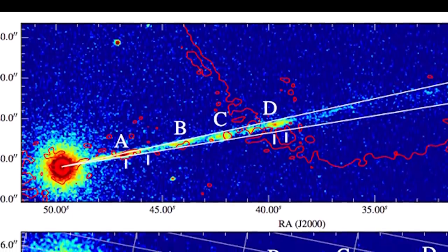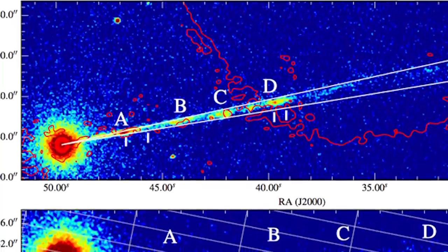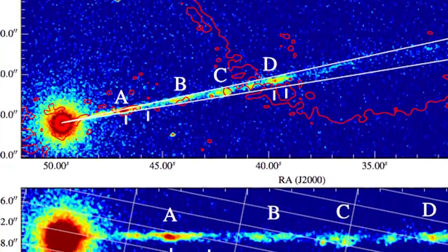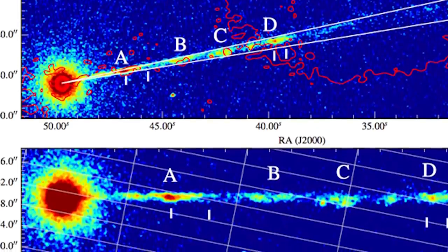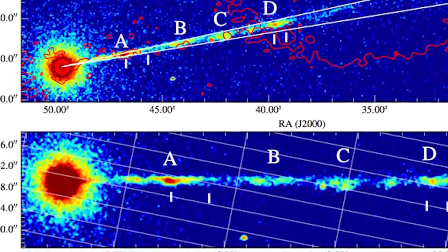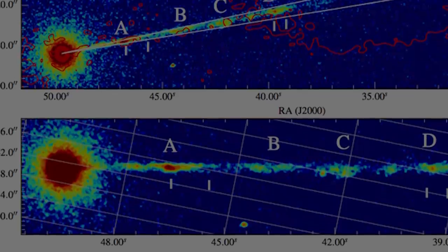Although tentative evidence for this counterjet has been previously reported, Chandra's photos in 2016 confirmed its existence. The main beam is pointed roughly in the direction of Earth. Thankfully, our planet is out of danger, as Pictor A is safely 500 million light-years away.